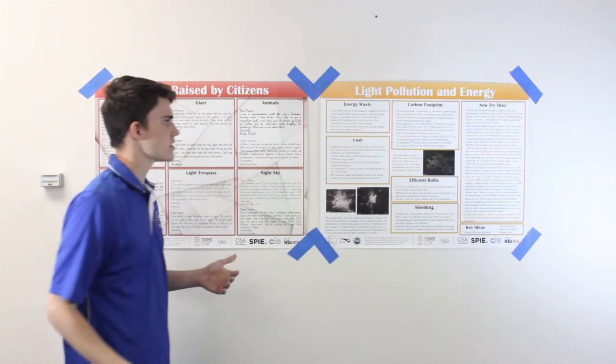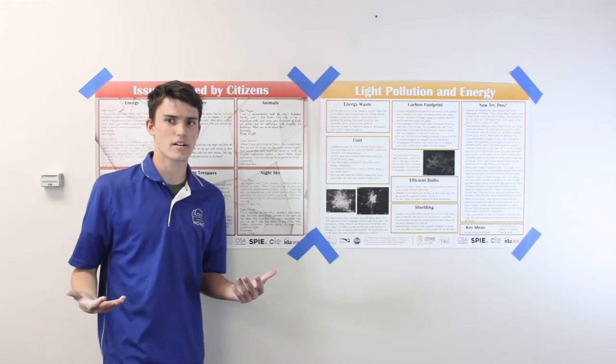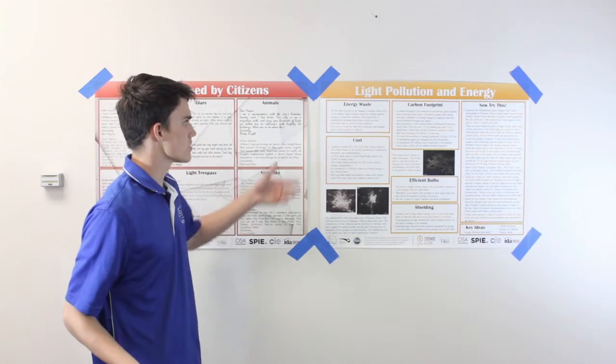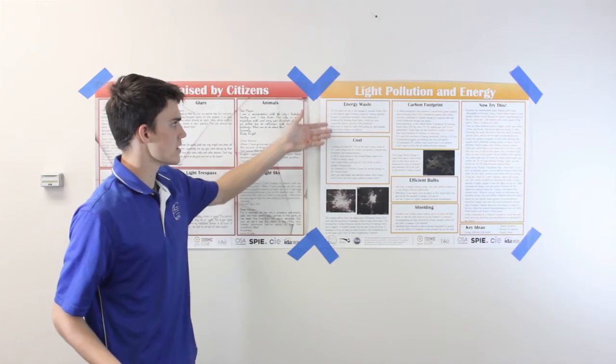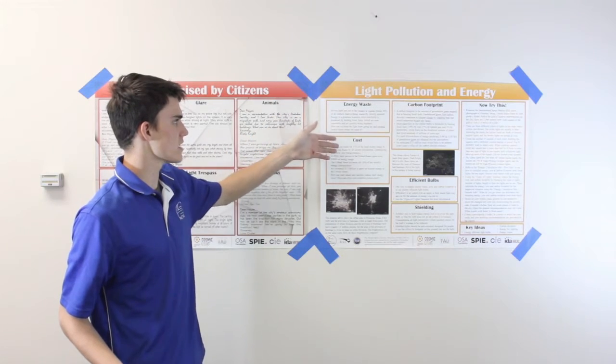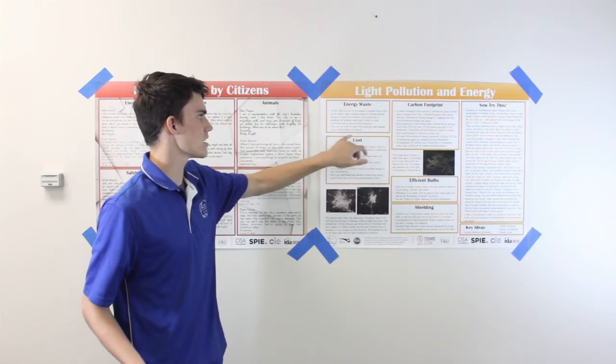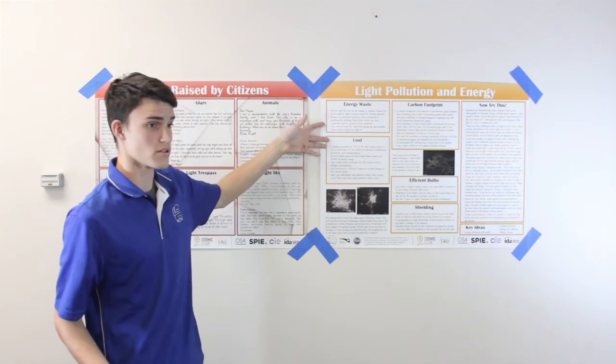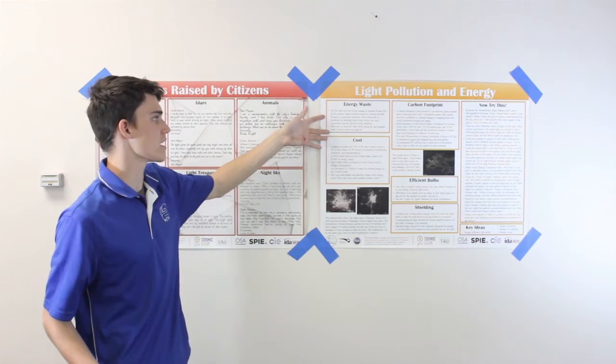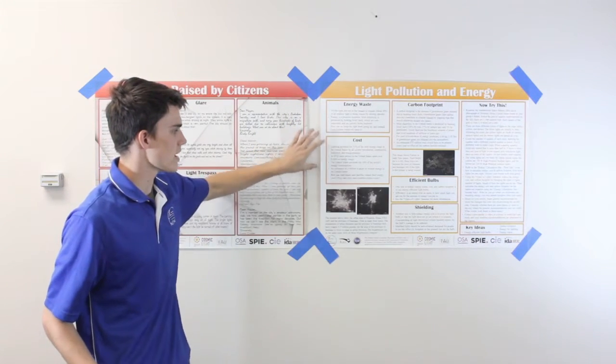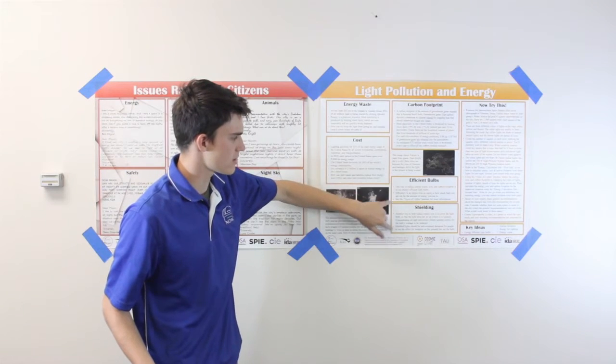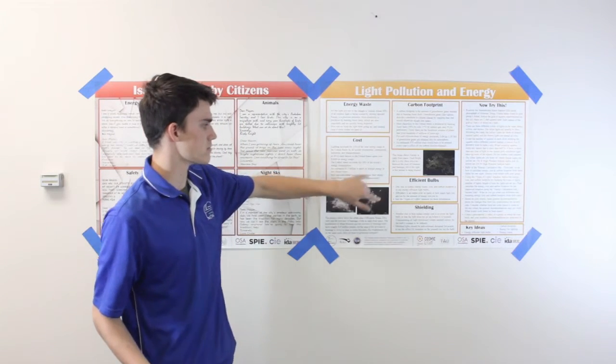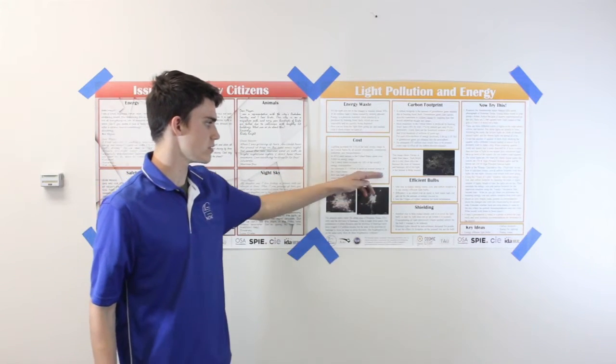To understand these issues, the students need background on energy. That's what this poster is for. This gives three different things on energy: waste, cost, and carbon footprint, which are the problems presented by energy and light pollution. Down here are two different ways that these problems can be solved through efficient bulbs and shielding.